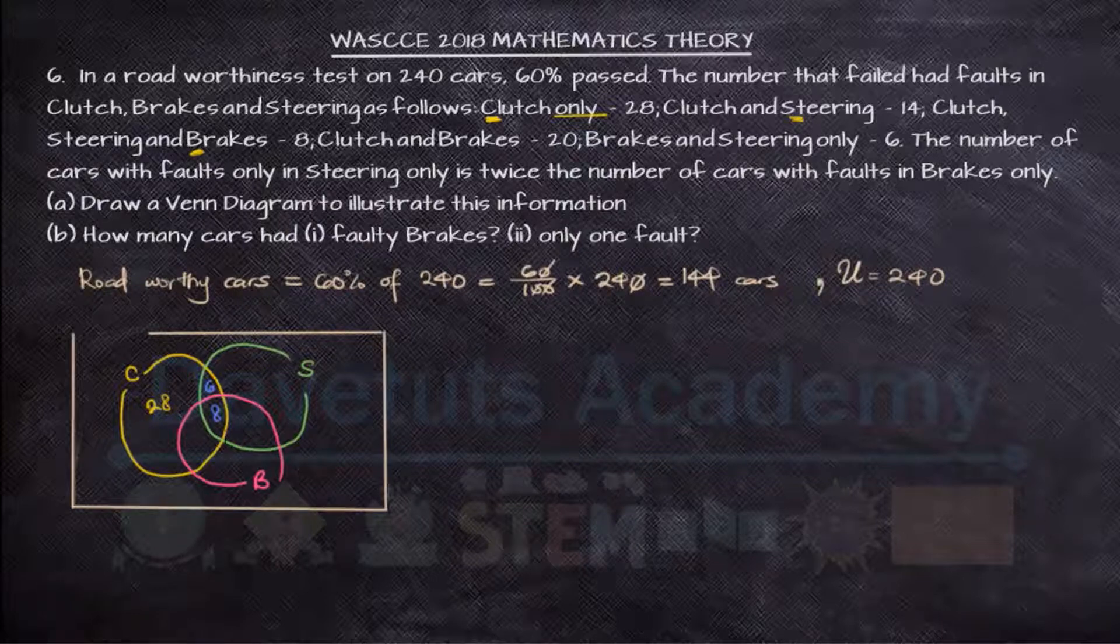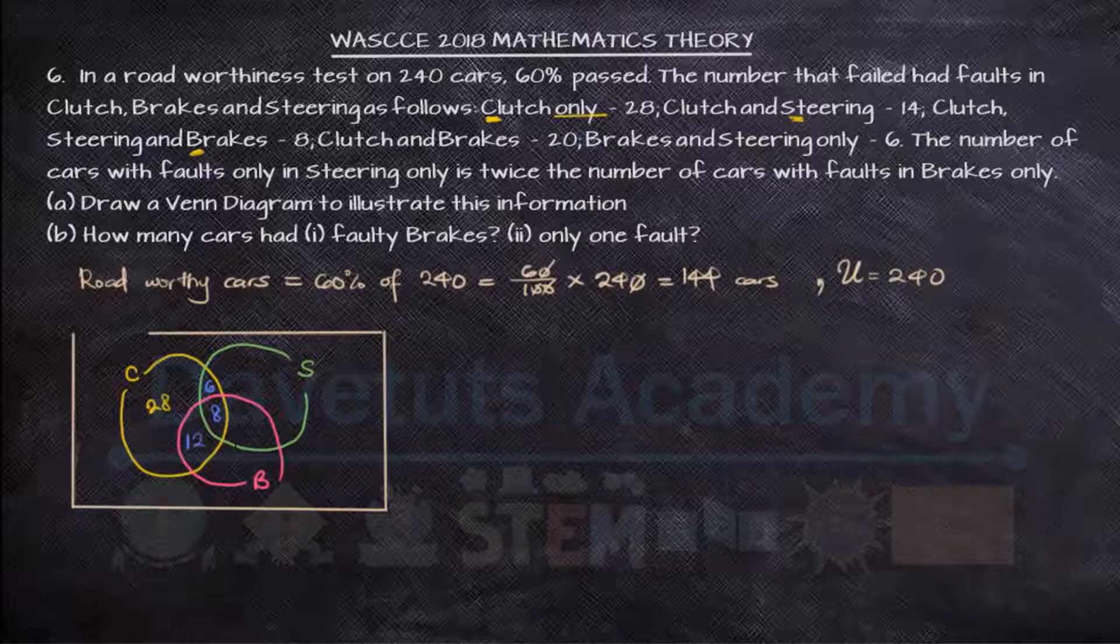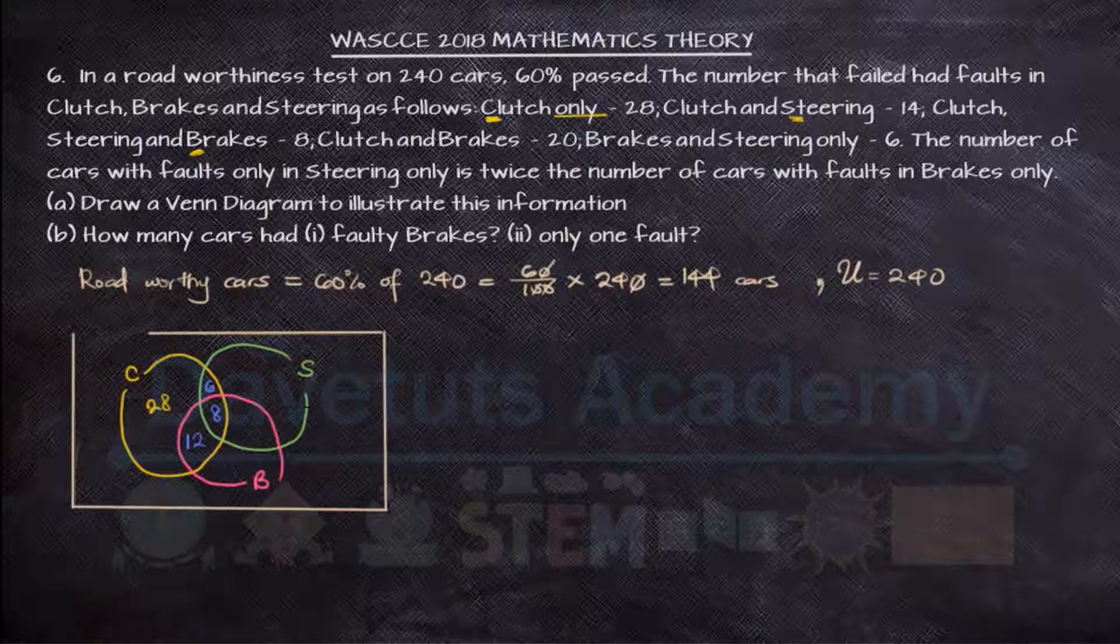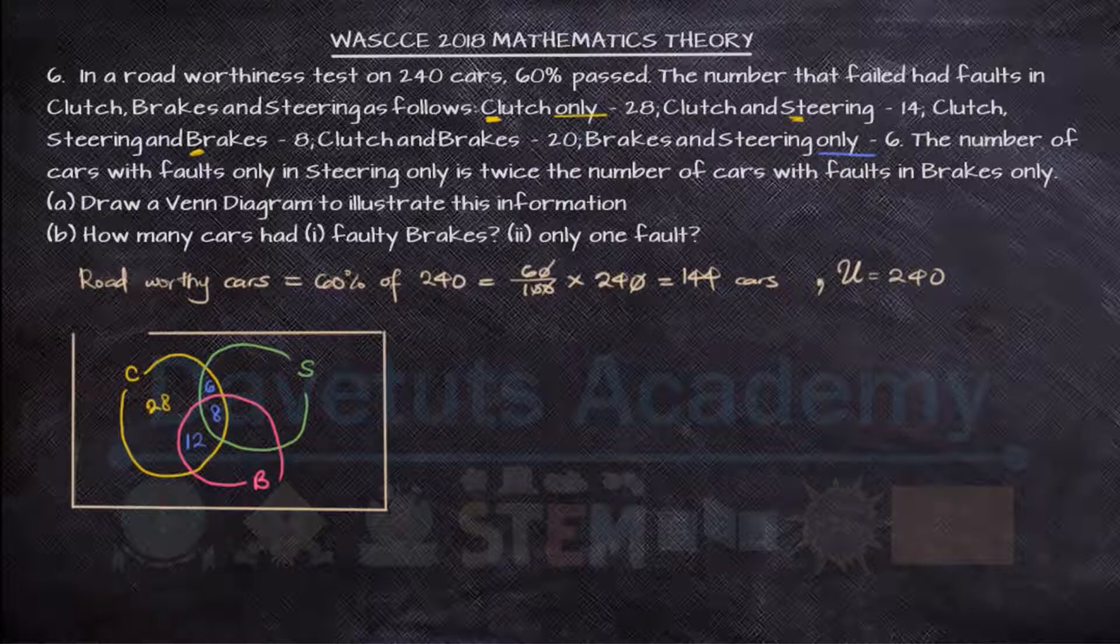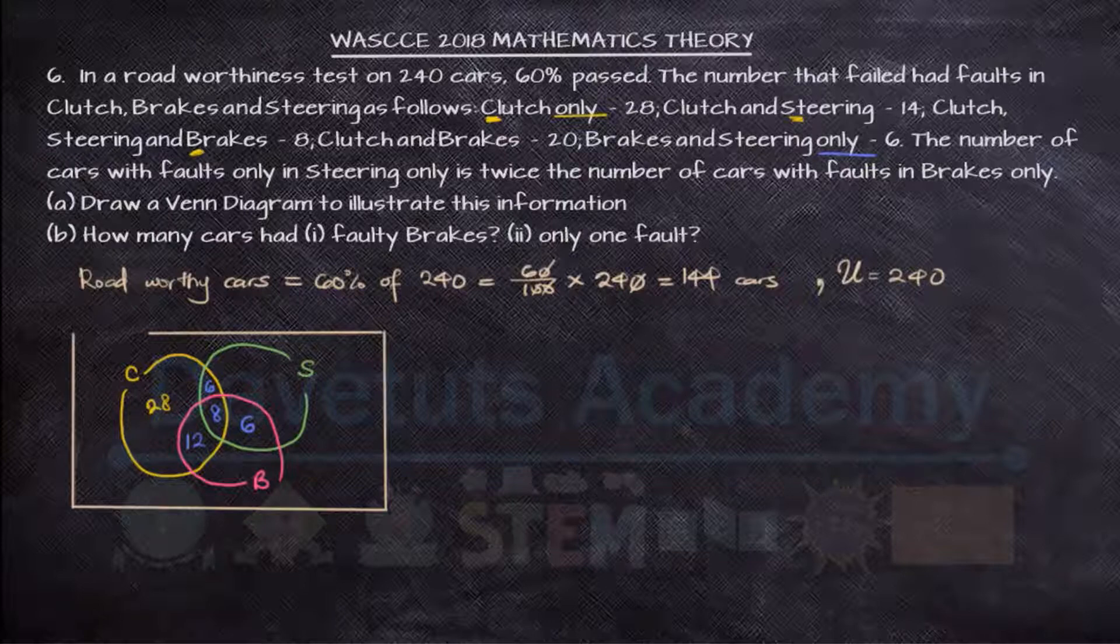Now we are also told that the vehicles with clutch and brake issues is 20. Then 8 subtracted from 20 will give us 12. Then with brakes and steering only, the only means that the 8 is not included. So we have 6 here.